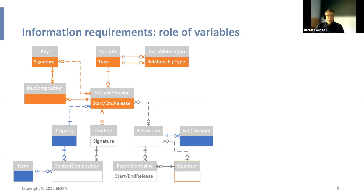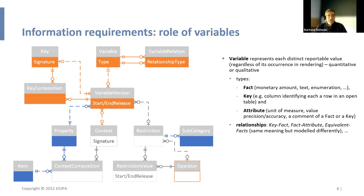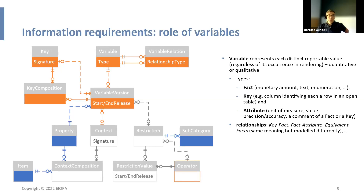Variables are something not present in the current DPM. They are used to represent each different thing that filers need to report — each value they provide is a variable. There are three types: fact variables, which are the regular observations (e.g., carrying amount equals 100 million); key variables, which provide more information to uniquely identify fact variables, typical in open tables where some columns are facts and some are keys; and attribute variables.